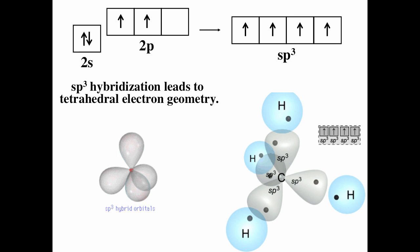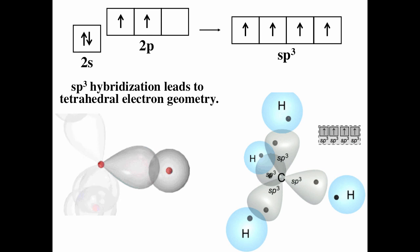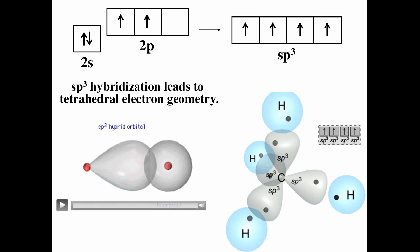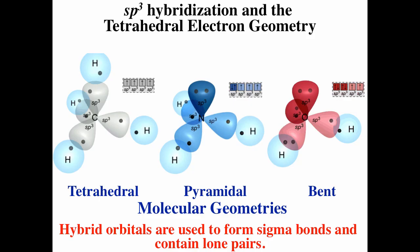A methane molecule forms when four hydrogen atoms form sigma bonds to the SP3 hybrid orbitals of the carbon atom. Sigma means electron density is on the internuclear axis. Methane has four regions, so SP3 hybridization and tetrahedral electron geometry. Ammonia also has four regions, but one is a lone pair — a hybrid orbital is used to contain the lone pair, and the others form sigma bonds. Water has two lone pairs, so two hybrid orbitals contain lone pairs and two form sigma bonds. Hybrid orbitals can form sigma bonds or contain lone pairs.